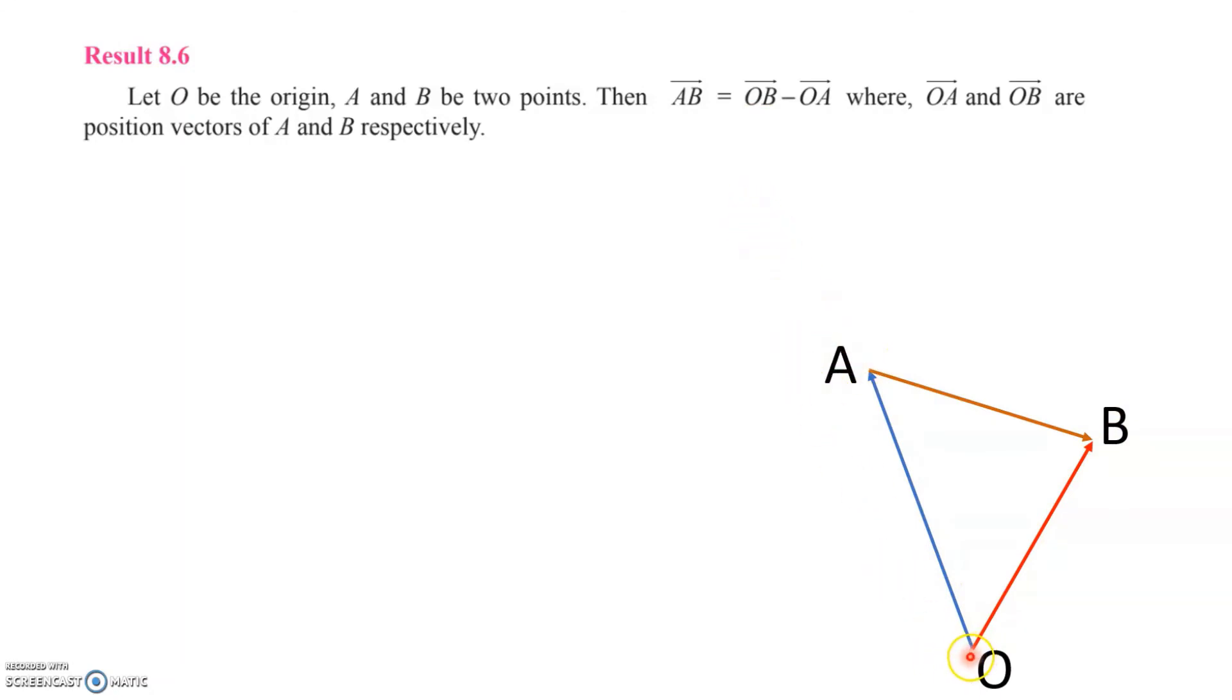We can see that OA plus AB equals OB according to the addition rule of vectors.